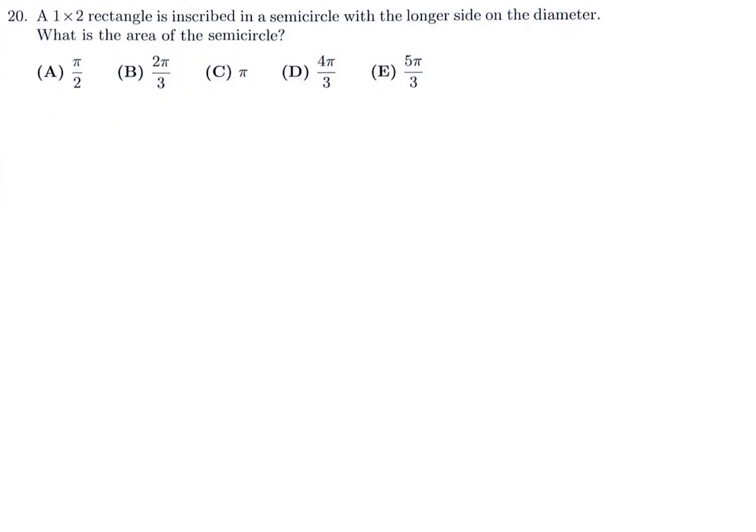A 1 by 2 rectangle is inscribed in a semicircle with the longer side on the diameter. What is the area of the semicircle? So we have this circle, and then let's draw a diameter. So that's the approximate diameter. And then we have this 1 by 2 rectangle. So this is 1 and this is 2. And they want you to find the area of the semicircle. Well, the first thing to do, of course, is to draw a line from the center to the vertice right there. And that, of course, will represent the radius of that circle. And then just to make things a bit clearer, I'll draw a line from that center to the top of that rectangle.